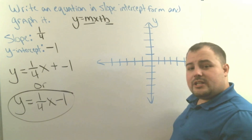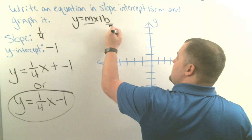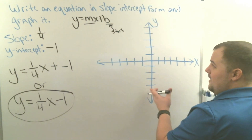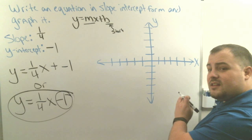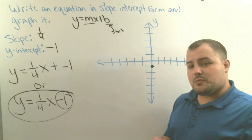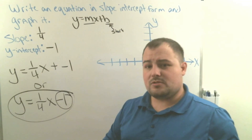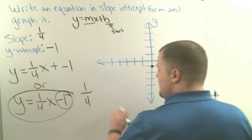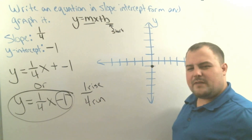Now I need to graph this. Think back — the b is where your graph starts, also called your y-intercept. Look at the y-line and put a dot right where our graph starts. Our graph is going to start at negative 1 on the y-line. So here's the y-line, here's negative 1 — we're going to put a point right there. That's where we're starting our graph. From our starting point, we use the slope to make additional points. Our slope is 1/4, so the top number tells me how much to rise and the bottom number tells me how much to run.